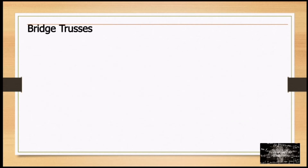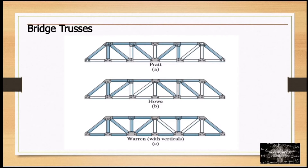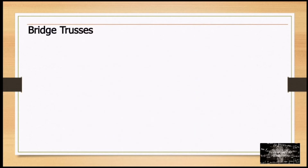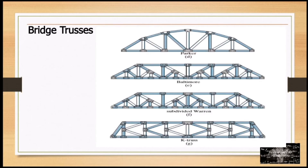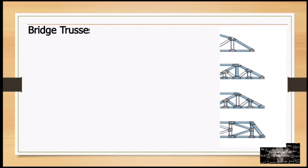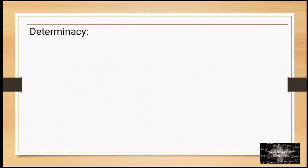For bridge trusses, we have: Pratt, Howe, Warren with vertical members, Parker, Baltimore, subdivided Warren, and K-truss. For determinacy, b plus r is equal to 2j, which means the structure is statically determinate.